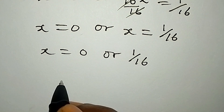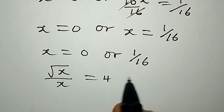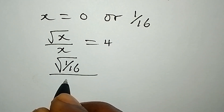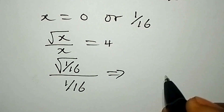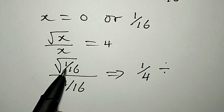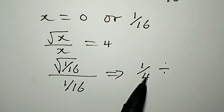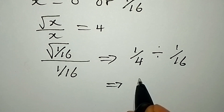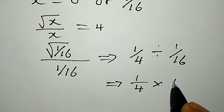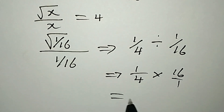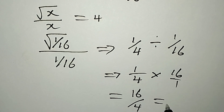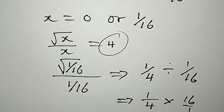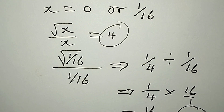We have x equal to 0 or 1 over 16. Let's put this back into the equation to verify. The equation is root x over x equals 4. Taking x = 1/16: the square root of 1/16 is 1/4, so we have 1/4 divided by 1/16, which equals 1/4 multiplied by 16/1, giving 16 over 4, and 16 divided by 4 equals 4.